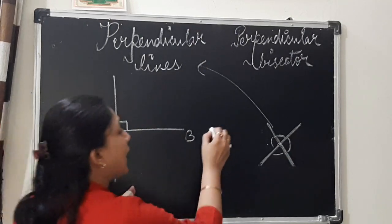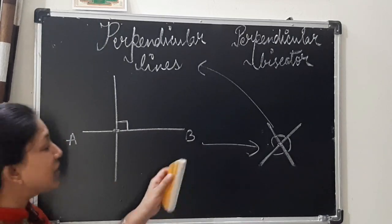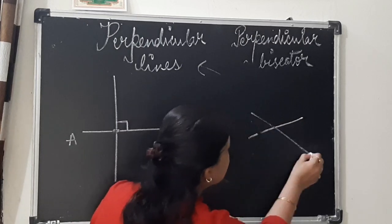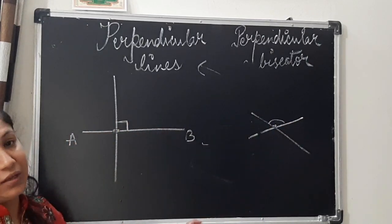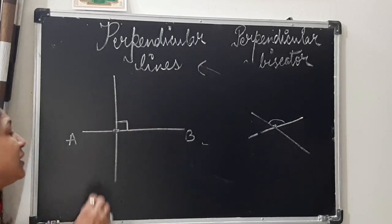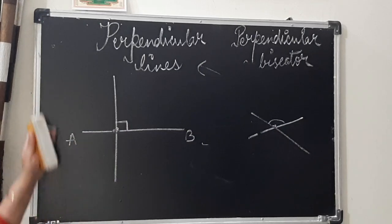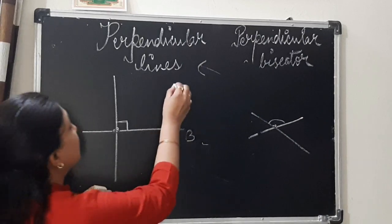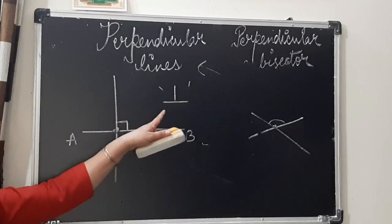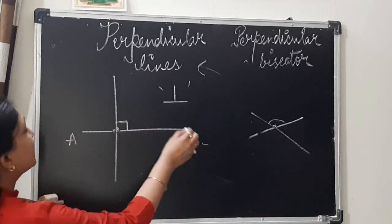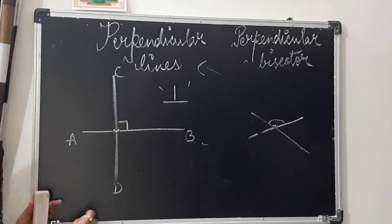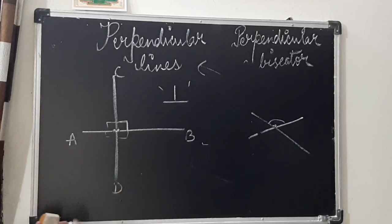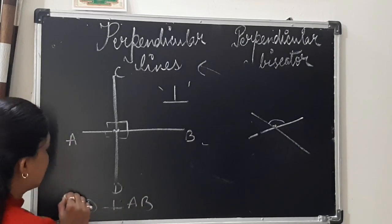This is how perpendicular lines are different from intersecting lines. In intersecting lines, the two lines intersect each other but the angles are not always at right angle. For perpendicular lines, the two lines will always intersect at right angle. The symbol for perpendicular is an inverted T. So, line segment CD is perpendicular to line segment AB, which can also be written using symbolic representation.